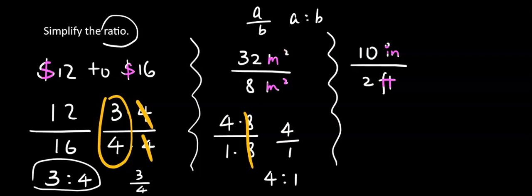Okay, we're going to change the feet to inches. So we have 10 inches. Every one foot is 12 inches. We have 2 feet, so we have 24 inches.